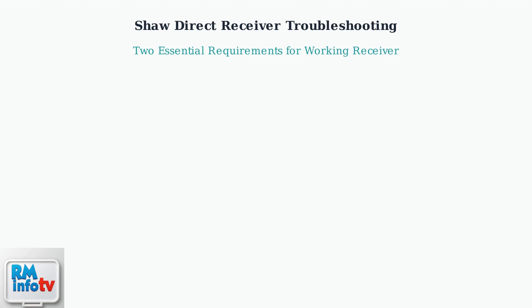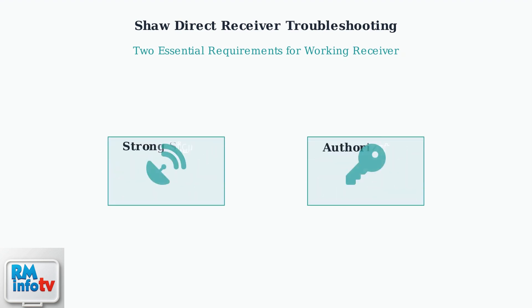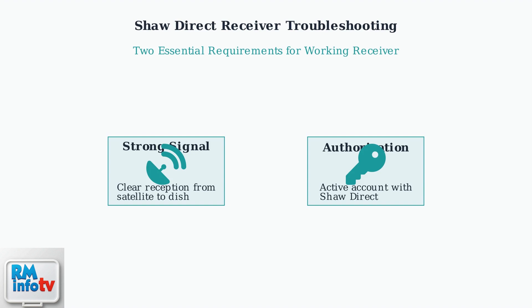When troubleshooting SHA-DIRECT receiver issues, understand that every working receiver needs exactly two things to function properly. First, you need a strong signal from the satellite. Second, your receiver must be authorized by SHA-DIRECT with an active account.